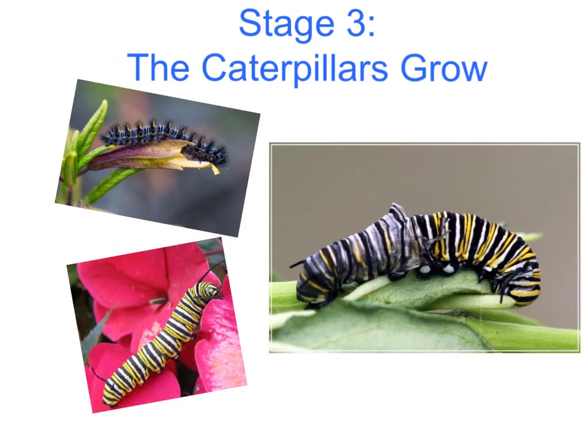Stage 3. Once the caterpillars have hatched, they continue to eat and grow. Caterpillars shed their skin often as they grow bigger and bigger. This picture shows the caterpillar shedding its skin. This is known as the pupa stage.